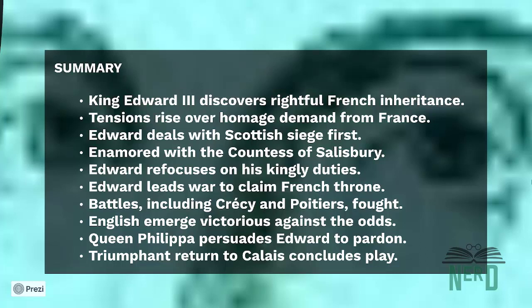In the second part of the play, Edward leads his army into France, engaging in a war to claim the French throne. There are arguments and battles including the Battle of Crecy, where his son, Edward the Black Prince, distinguishes himself in combat. Despite facing overwhelming odds, the English emerge victorious, with Prince Edward capturing the French king at the Battle of Poitiers.